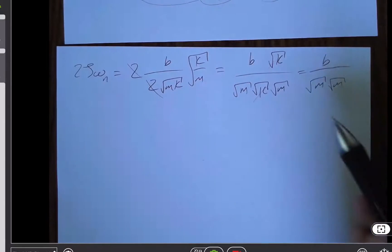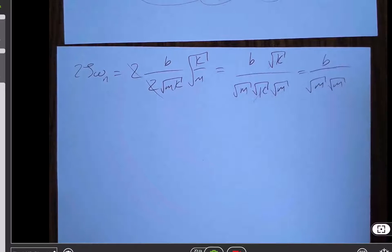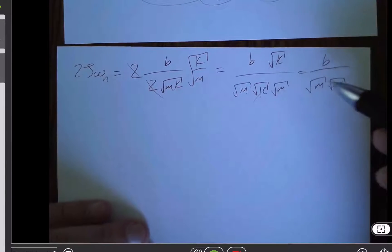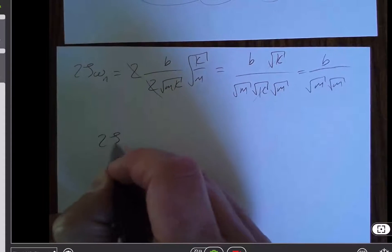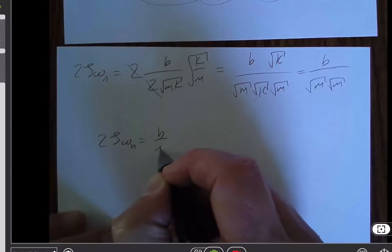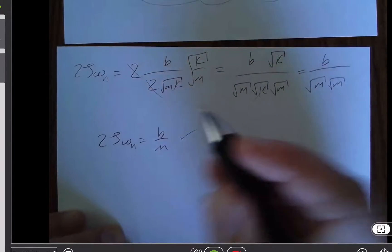And if we were mathematicians, we might be very concerned about the sign of m and so on. But as engineers, we know that we're talking about positive mass. And so root m is a real number times root m just gets us back m. And so we've shown that 2 zeta omega n is equal to b over m, which was precisely what we were trying to prove.